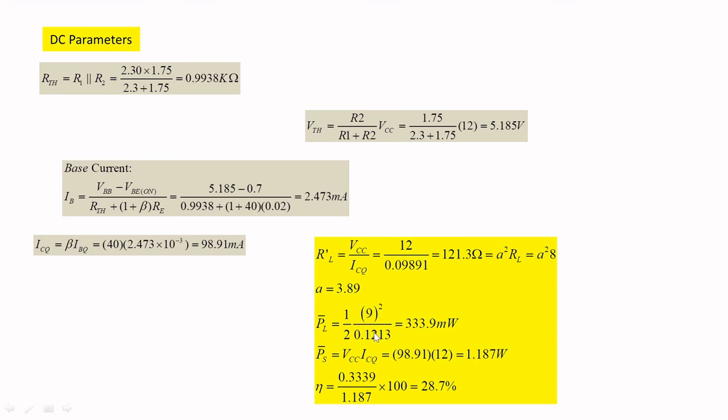Load power formula is 1/2 Vp squared divided by RL dash. RL dash is unknown for you, or you can find using the formula Vcc squared divided by ICQ, and also A squared times RL. Vcc is 12V and ICQ is 0.01991A. If you calculate that is found to be 121.3Ω. That is equivalent to A squared times RL. From here I can find the turns ratio is 3.89.